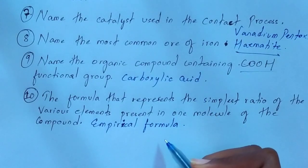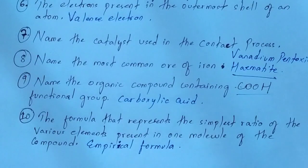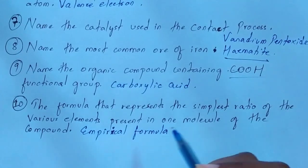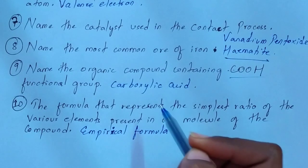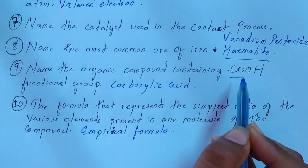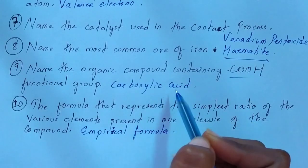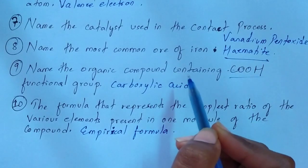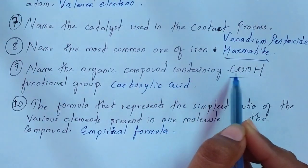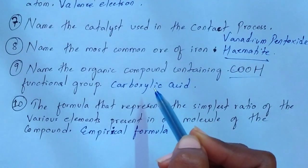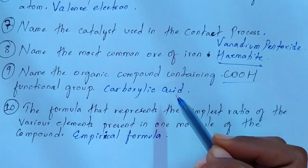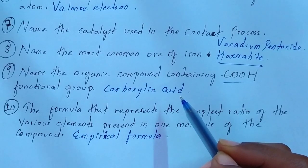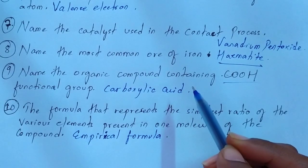These are some of the important questions for your board examinations, mostly asked in the 'name the following' type. I'm also giving you one bonus question to answer in the comment section: if the organic compound contains CHO as the functional group instead of COOH, what will the answer be? Write your answer in the comments. If you want the PDF of this, you can download it from the link in the description box.